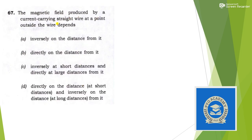Next: the magnetic field produced by a current-carrying straight wire at a point outside the wire depends on — this is from higher NCERT. The magnetic field depends inversely on the distance from the wire. Answer is option A. This is straightforward for anyone who has read the relevant NCERT physics chapter.